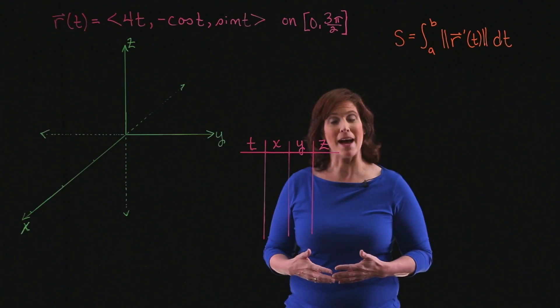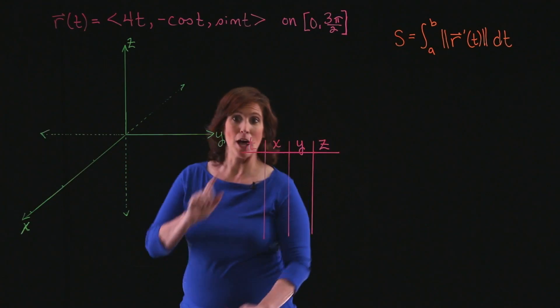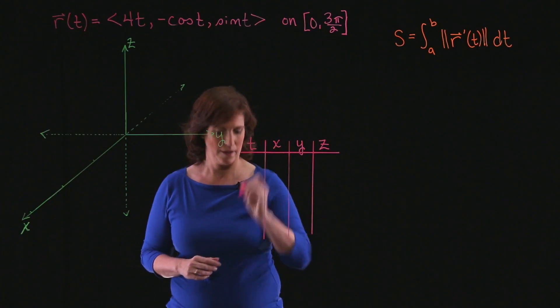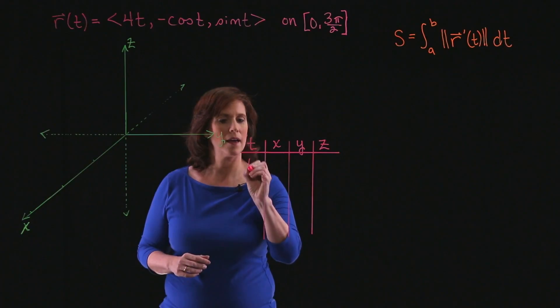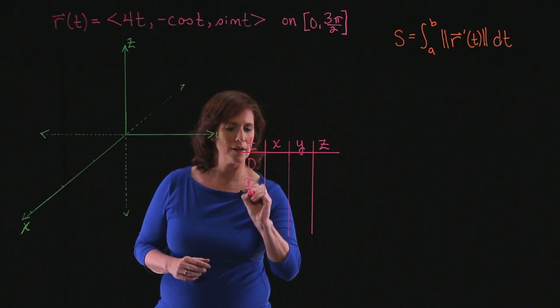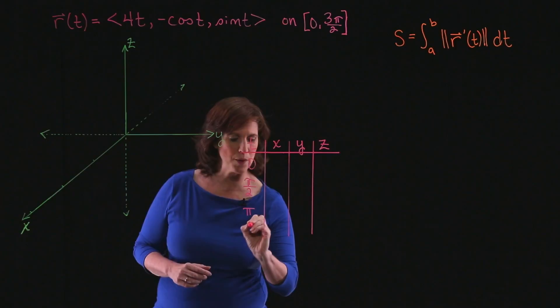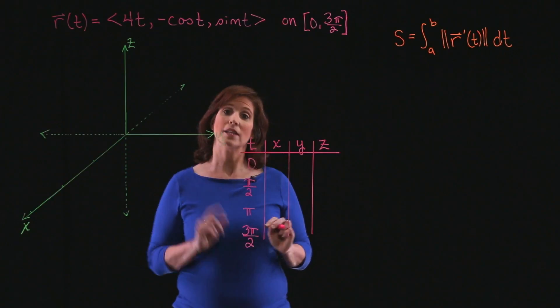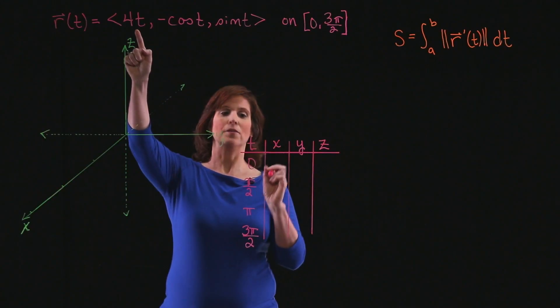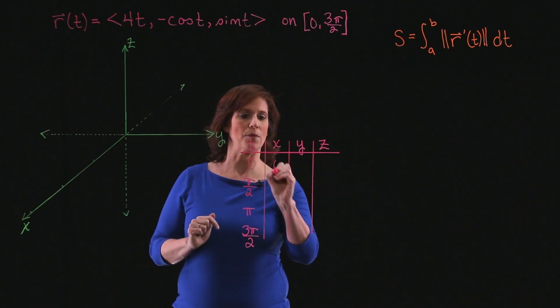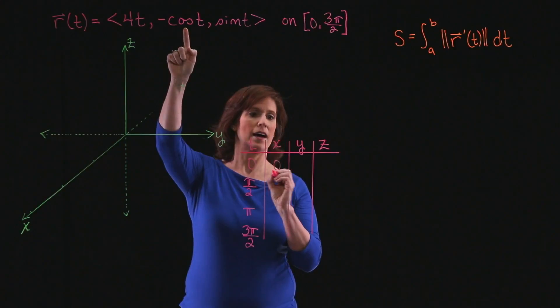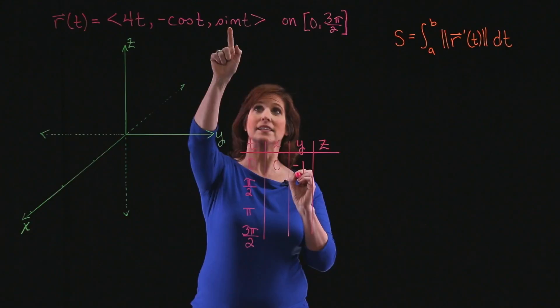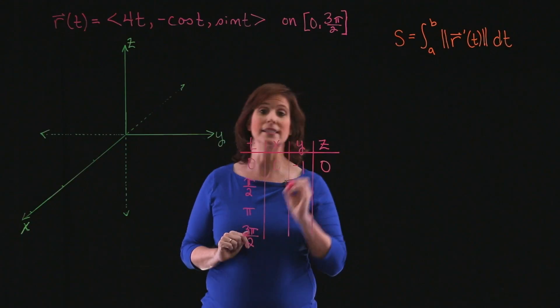Let's begin by getting a sketch. I'm going to begin by plotting some points. So let's just let t equal 0, π/2, π, and 3π/2 for some sample points. Let's see what happens to my curve. The x value when t equals 0 will be 0. The cosine of 0 is 1, so the y coordinate will be -1. And the sine of 0 is 0.